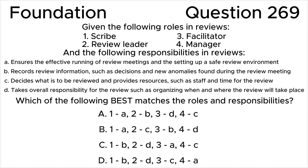Given the following roles in reviews: one, scribe; two, review leader; three, facilitator; four, manager. And the following responsibilities in reviews: A. ensures the effective running of review meetings and the setting up of a safe review environment; B. records review information, such as decisions and new anomalies found during the review meeting; C. decides what is to be reviewed and provides resources, such as staff and time for the review; D. takes overall responsibility for the review, such as organizing when and where the review will take place.